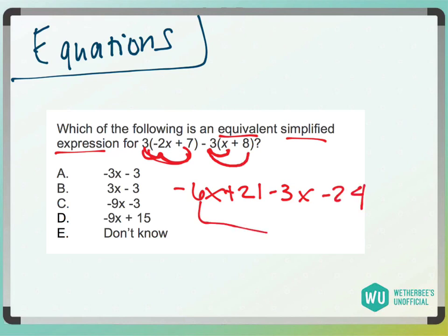Now we're going to combine like terms. Negative 6x minus 3x is negative 9x. You can get rid of b and a, plus 21 minus 24 is minus 3, so we'd be left with answer choice c.